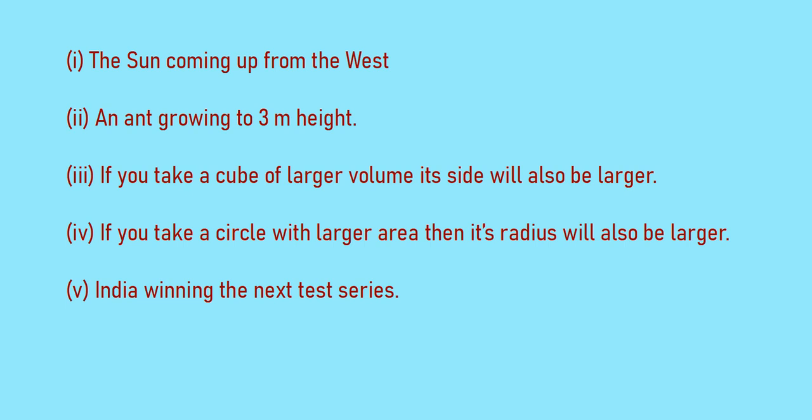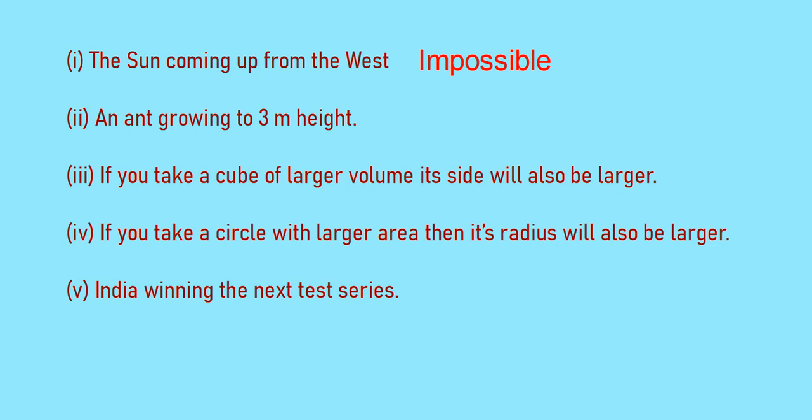Look at the statements given. The sun coming up from the west — is it possible? No. So we can say this statement is an impossible statement. What about the next? Anand growing to 3 meter height. That is also an impossible statement.